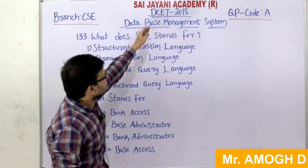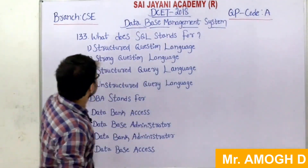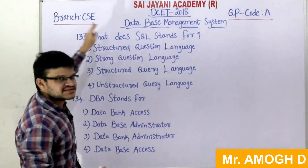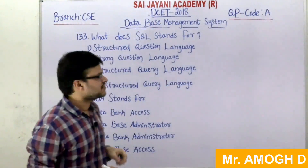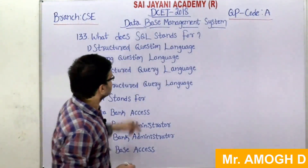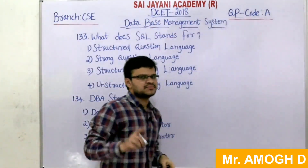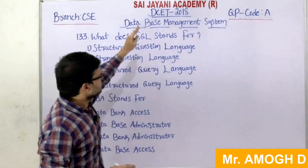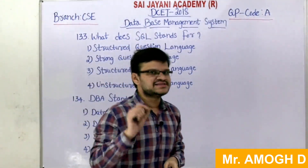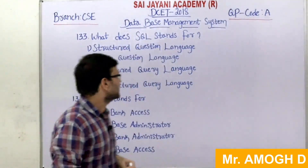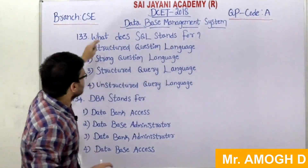For Diploma CET 2018, under the branch Computer Science, question paper code A, the subject is Database Management System (DBMS). This DBMS section mainly consists of 10 questions in DCET.